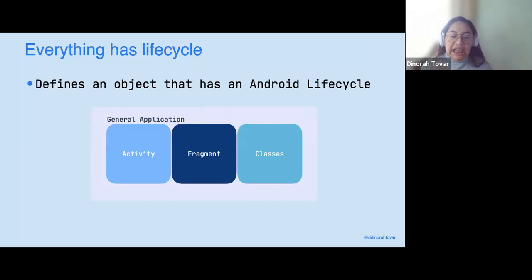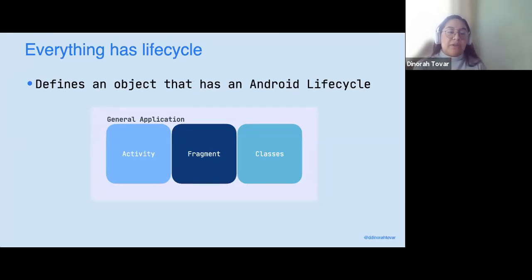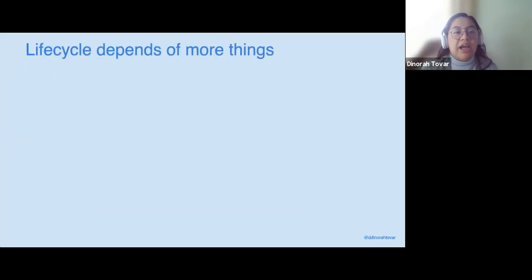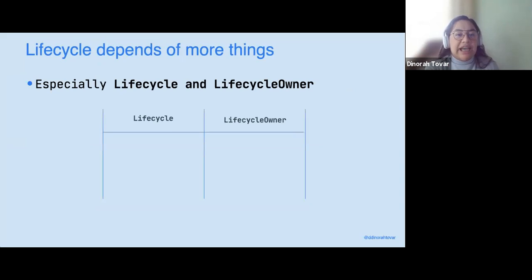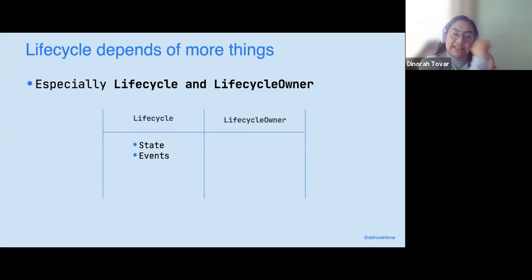Every lifecycle that you are addressing and building — every activity, every fragment, and your general application — everything has a lifecycle. It goes through a process when it's created, when it's used, to when it's destroyed. Lifecycle depends on other things. Especially there are two interfaces: a Lifecycle and a LifecycleOwner. These interfaces have some details inside of them.